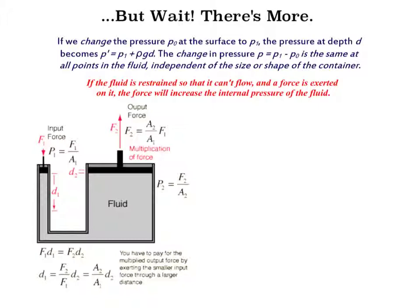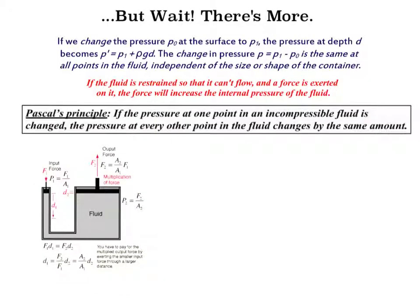The pressure exerted on a fluid in a closed vessel is transmitted throughout the fluid and pushes at right angles to all surfaces that it touches. This is called Pascal's Principle, which says, if the pressure at one point in an incompressible fluid is changed, the pressure at every other point in the fluid changes by the same amount. A really great practical example of Pascal's Principle is hydraulic lifts.